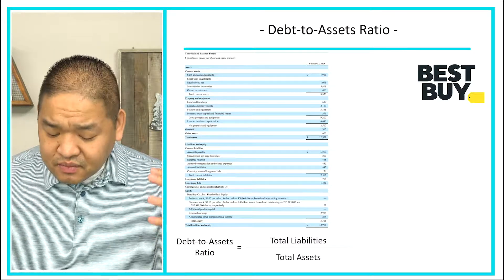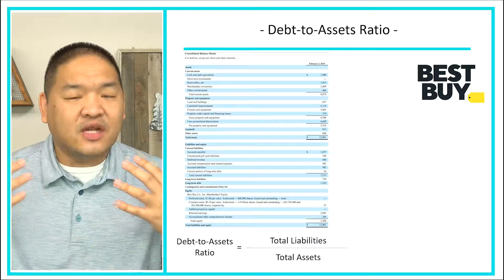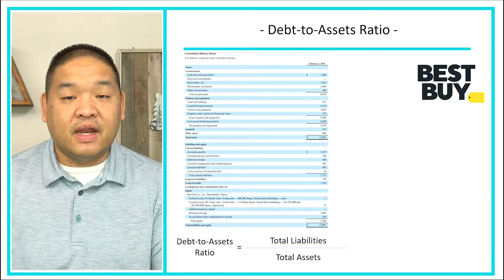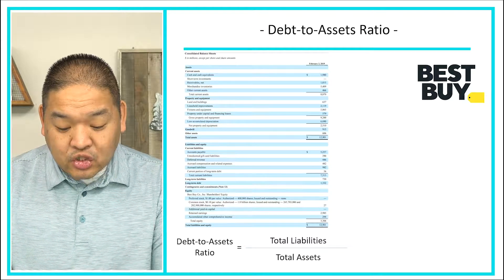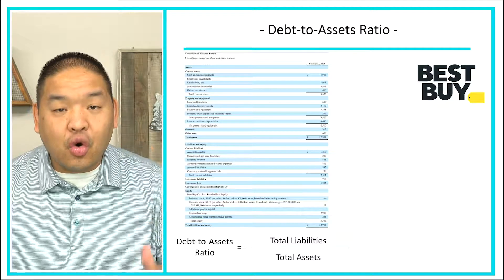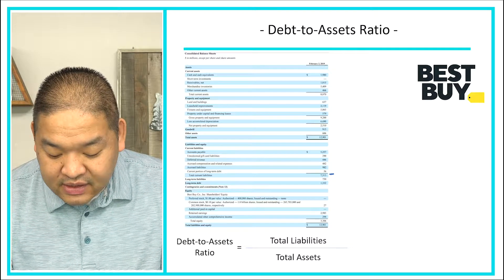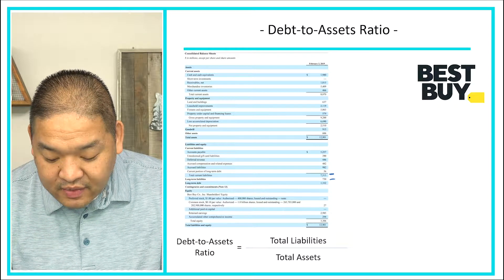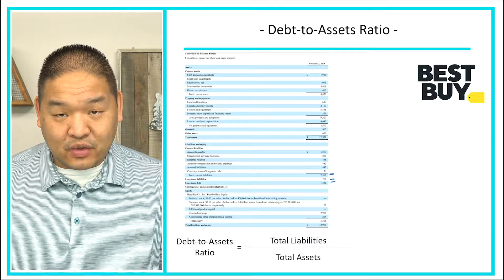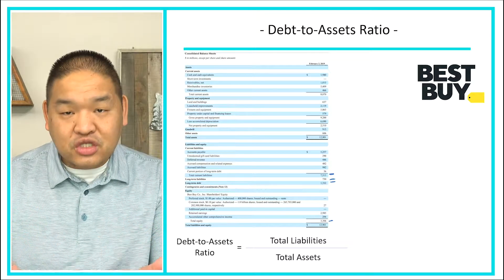Let's look at an example using Best Buy. We need total liabilities and total assets. The balance sheet doesn't show a single total liabilities line, so we can see total current liabilities, long-term liabilities, and long-term debt. An easier approach is to take total liabilities and equity and subtract total equity to find total liabilities.